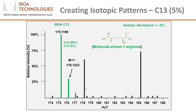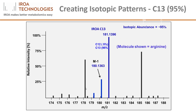This removes false data in the dataset and yields significantly better quality. The math that defines the 5% C13 peak shape is a simple binomial equation. It is therefore not surprising that the peak shape of a 95% C13 collection of peaks is calculated the same way. Shown here in blue, the 95% collection of peaks is the mirror image of the 5% collection of peaks.